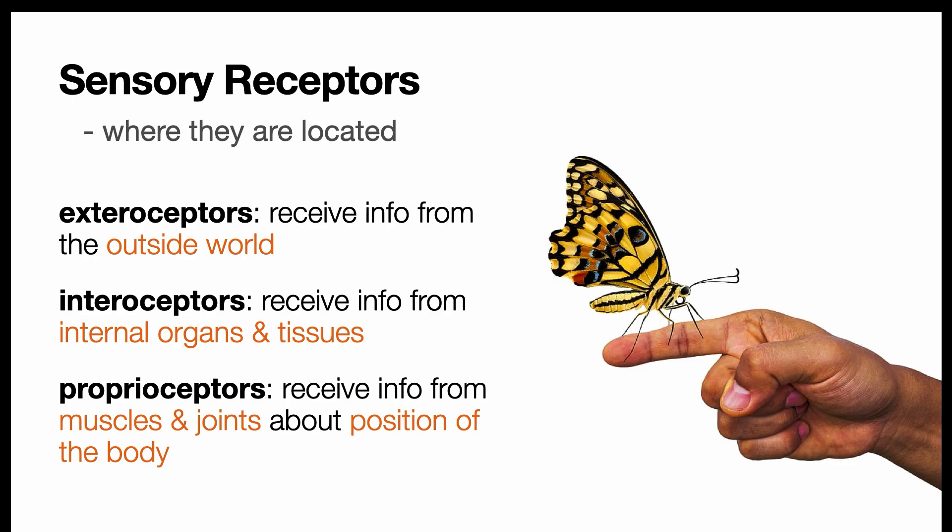Interoceptors, on the other hand, receive information from internal organs and tissues, such as if your heart is beating fast.